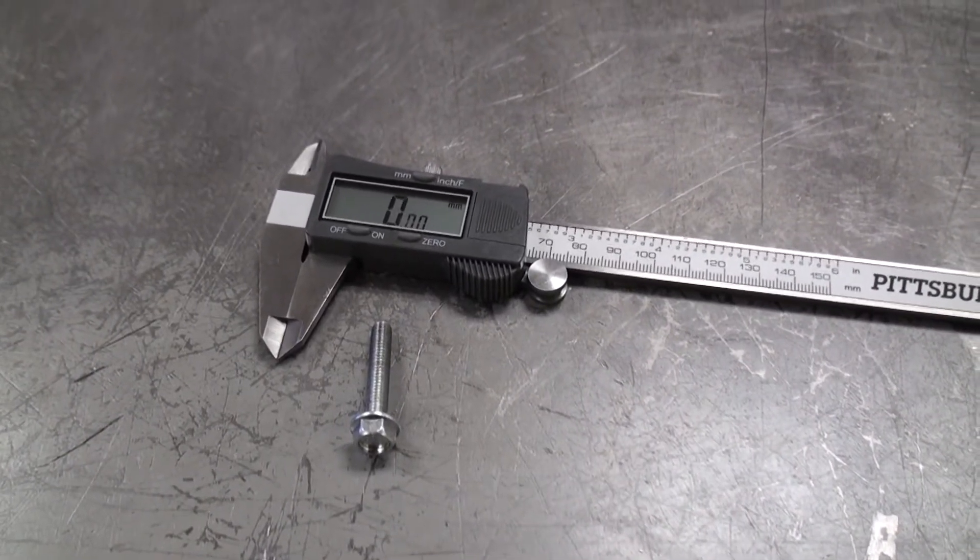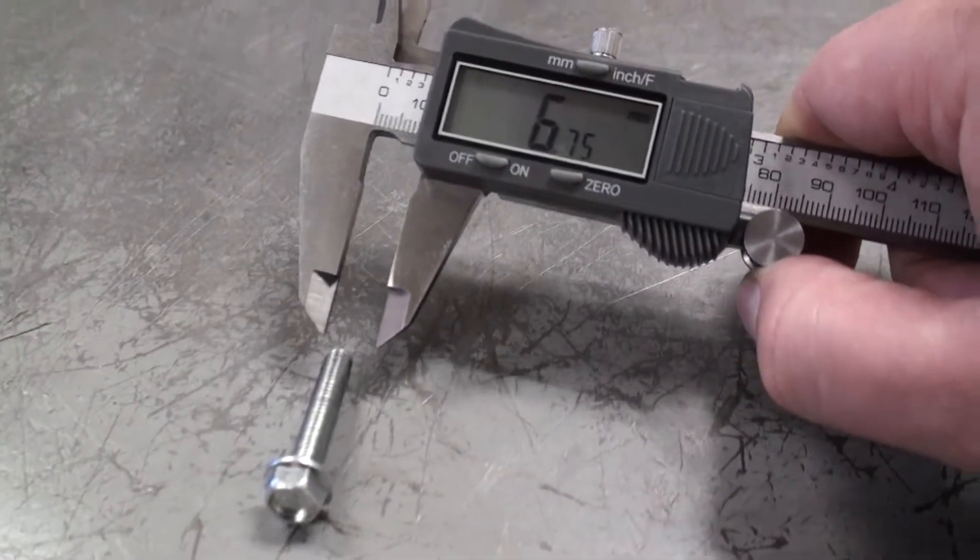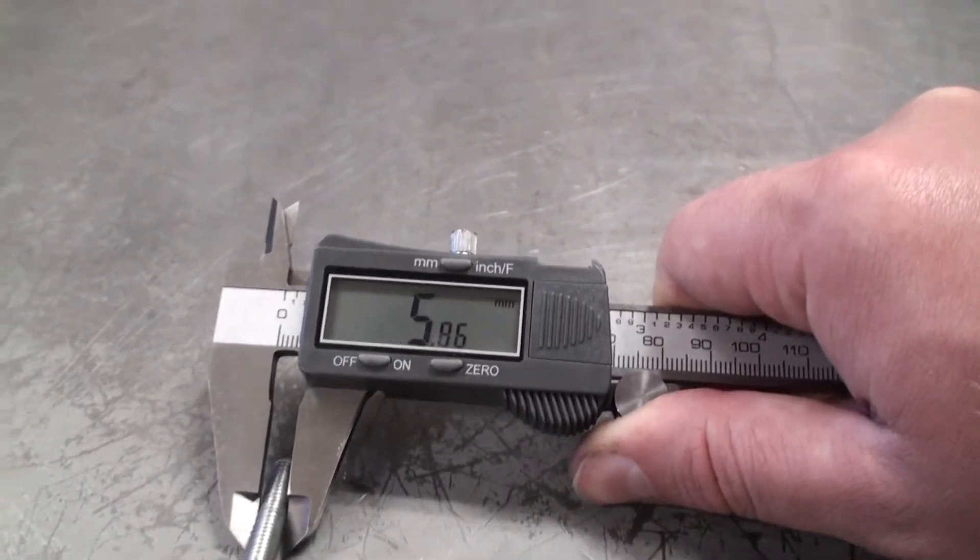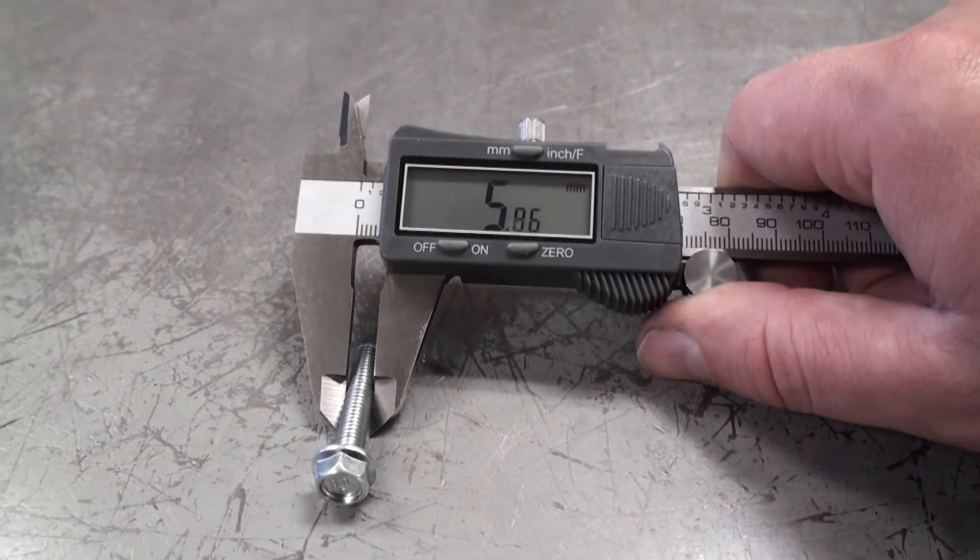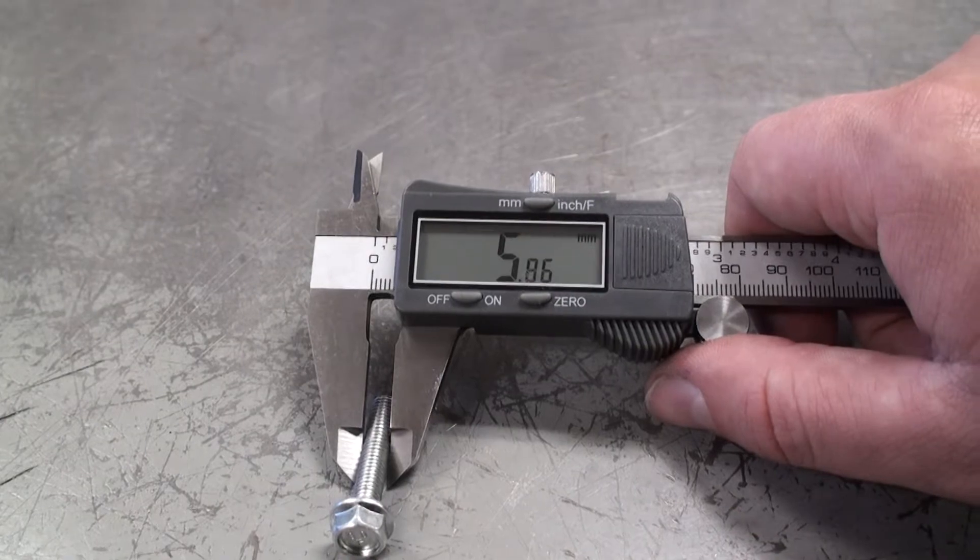Next we need to make sure that our tap and die are the right diameter. To do that we can use a caliper and measure the outside diameter of our bolt. Now keep in mind this number is going to be smaller than the nominal measurement, so here we're looking for a six millimeter diameter tap and die.